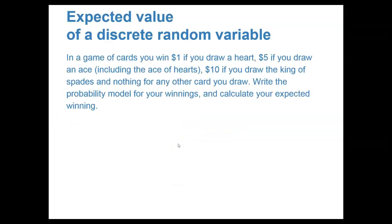Let's now take a look at how to find the expected value for a discrete random variable. Here's the scenario we're going to take a look at. In a game of cards, I will win $1 if I draw a heart from the deck. I will win $5 if I draw an ace, including the ace of hearts from the deck, and I will win $10 if I draw the king of spades. If I draw any other kind of card from the deck, I win nothing.